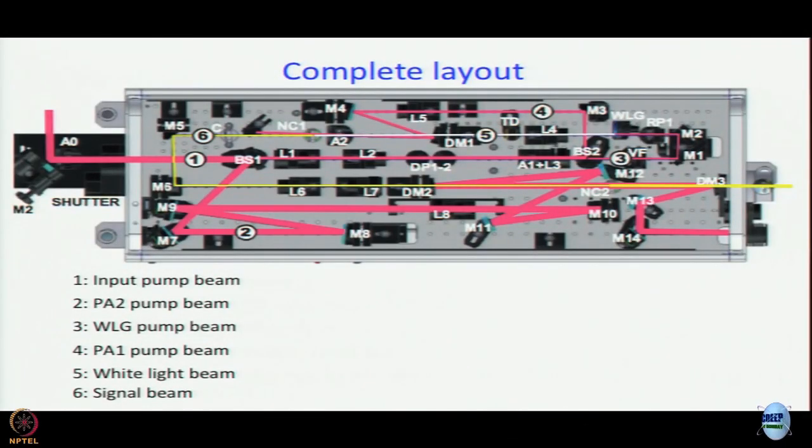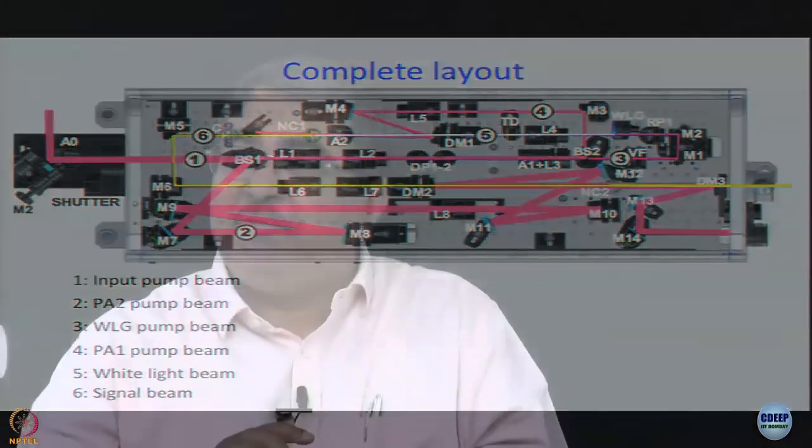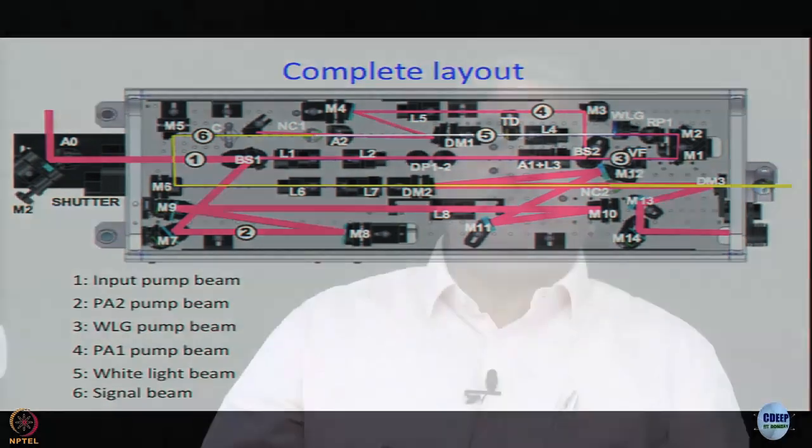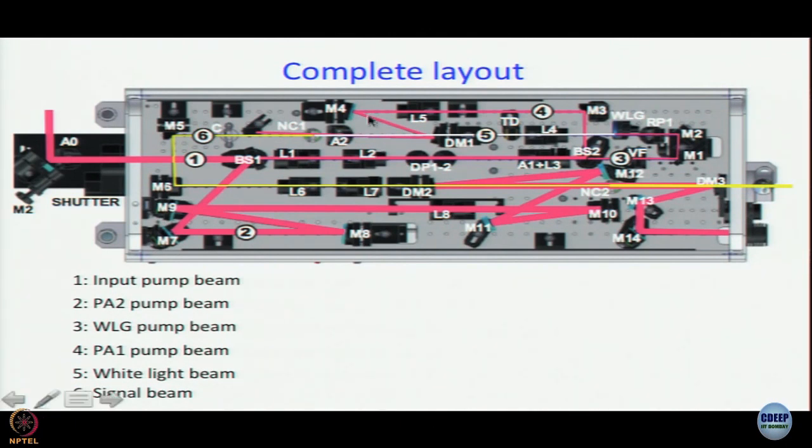That signal is amplified first then it goes here, path 6 is a signal beam. Then there is another nonlinear crystal NC2, that is your amplifier. Already once amplified signal beam is amplified for the second time in this NC2. On NC1 the white light and the pump are actually collinear. From this diagram it might look that they are little non-collinear, but they are perfectly collinear. I made a little bit of mistake - on NC1 it is non-collinear because you want to separate the pump from the signal. In the second part in NC2 it is collinear.